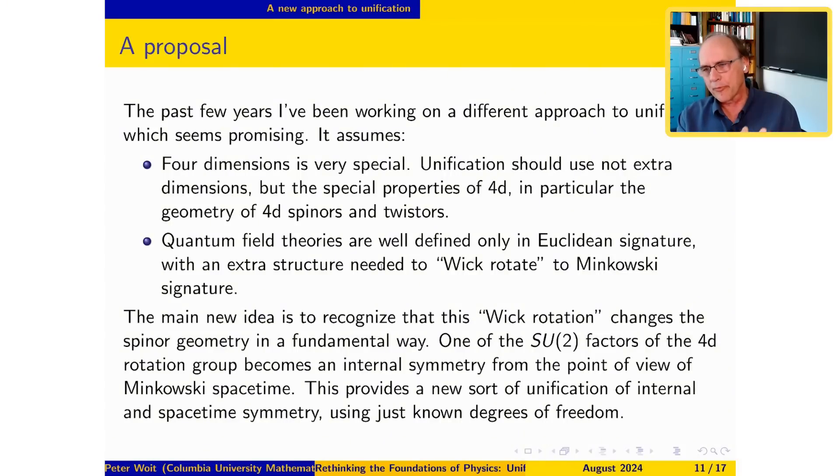And the idea is that when you Wick rotate to Minkowski spacetime, one of those two factors is going to be a spacetime symmetry. The other one is going to be an internal symmetry. Ah, right, right. Interesting. And this provides kind of a new unification of internal and spacetime symmetry. So these things get unified on the Euclidean side. And it just involves the degrees of freedom that we know about. There's no extra, nothing extra. But the new thing is to say, wait a minute, is to say, look, you really should think about what's going on at the Euclidean signature. And you should realize that there's a very important subtlety when you try to make spinors go back and forth between these, Minkowski and Euclidean.